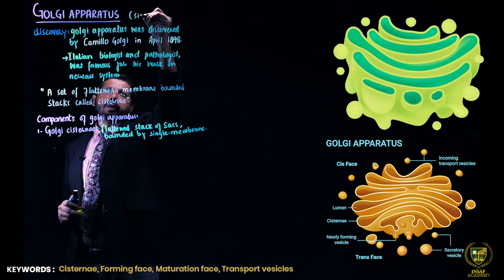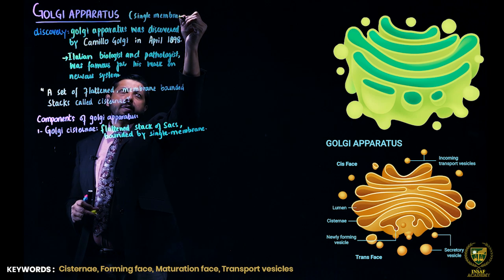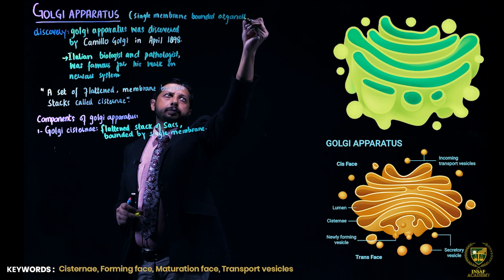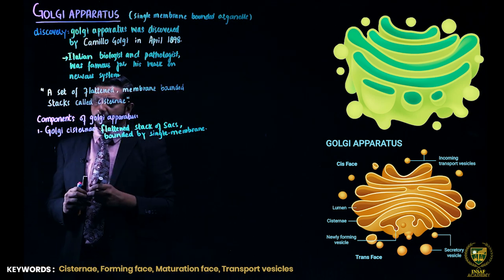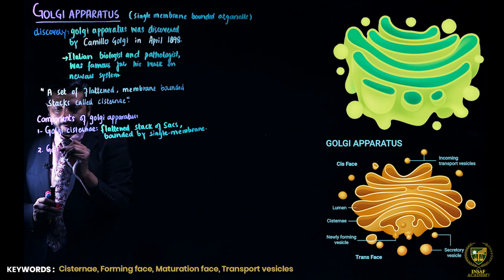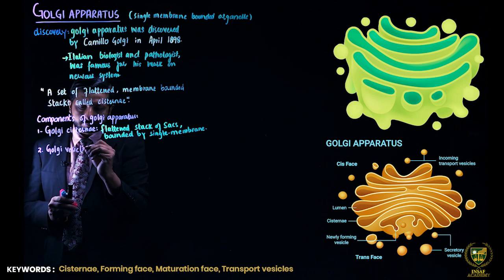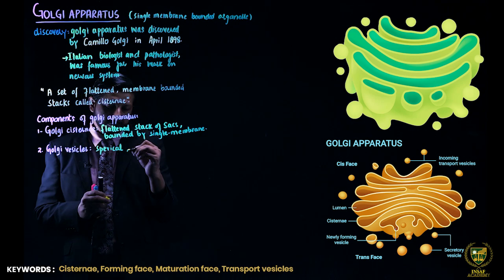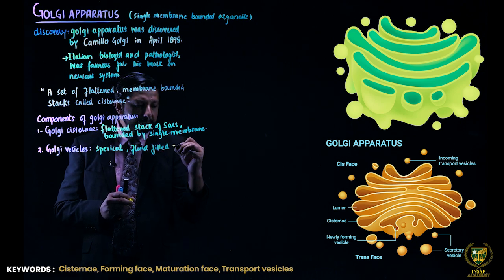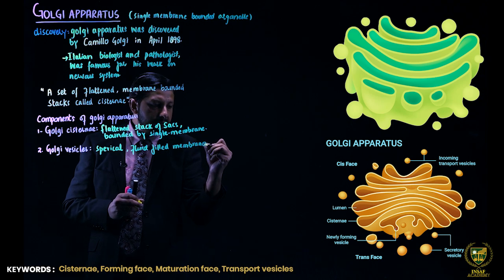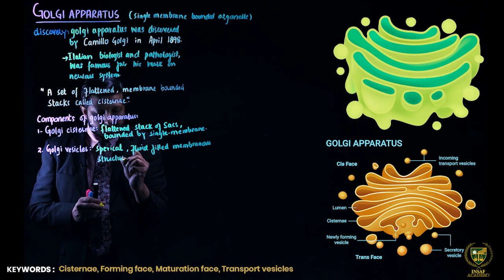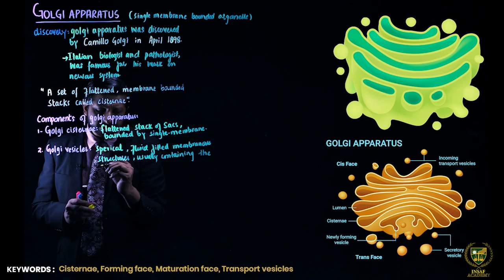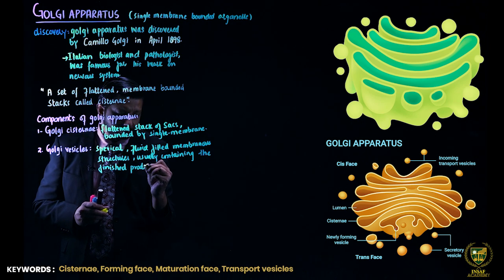And number two, the second component of Golgi apparatus is the Golgi vesicles. These are spherical, fluid-filled membranous structures usually containing the packed or finished products.